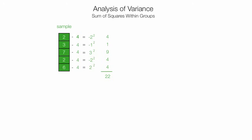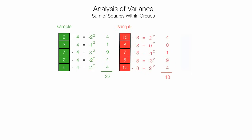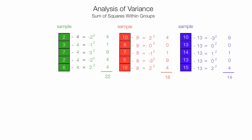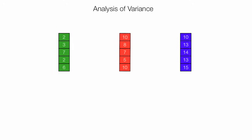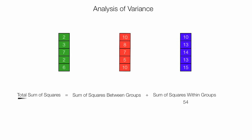Now I'll repeat this for each of the different samples. The sum of squares within groups is equal to the sum of squares of each of the individual groups. So I take 22 plus 18 plus 14, which equals 54. In your textbooks, you'll see this abbreviated as SSW. So I have one piece of the three sums of squares done, which is 54.